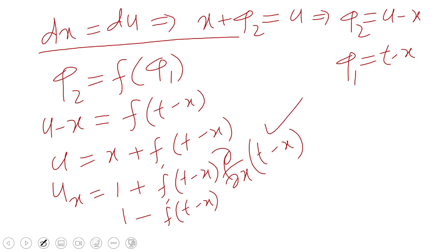That is U dash, that is UX. Again differentiation with respect to X, so UXX is equal to, I will get in this case F double dash of T minus X.